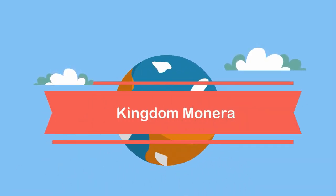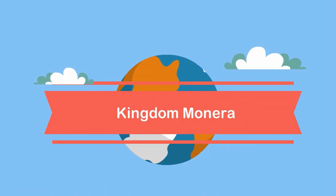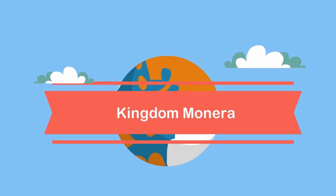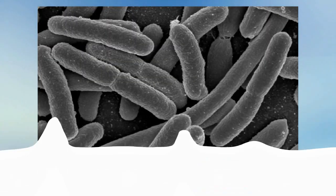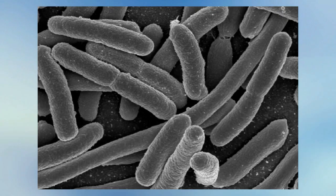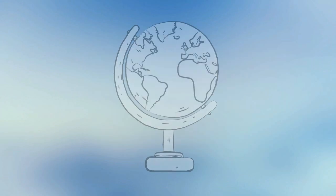Welcome to Moo Moo Math and Science. In this video I would like to talk about the Kingdom Monera. The Kingdom Monera consists entirely of single cell organisms. Members of this kingdom are found almost everywhere on earth.